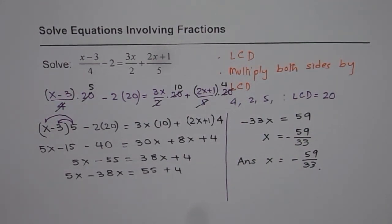I hope the steps are very clear. So the steps are: find the lowest common denominator, multiply all the terms by lowest common denominator so that you get rid of the fraction part, and then you solve the equation like a normal linear equation. Thank you.